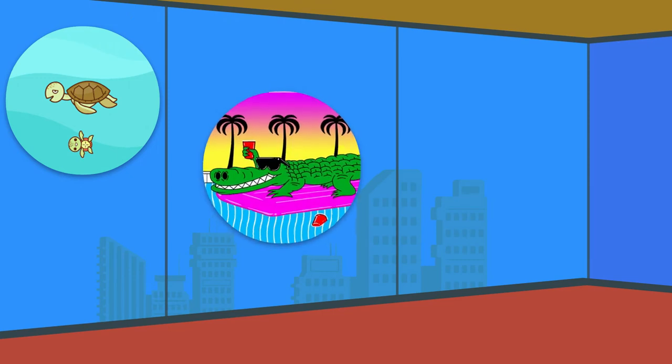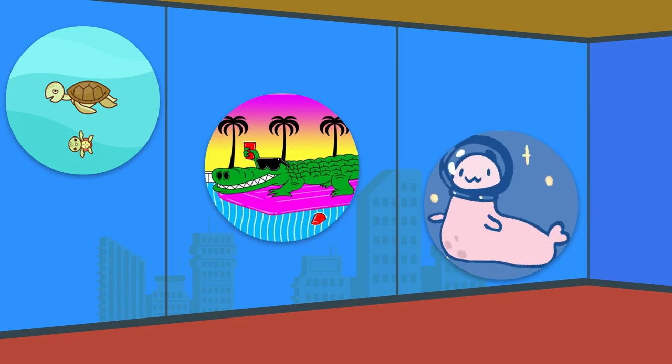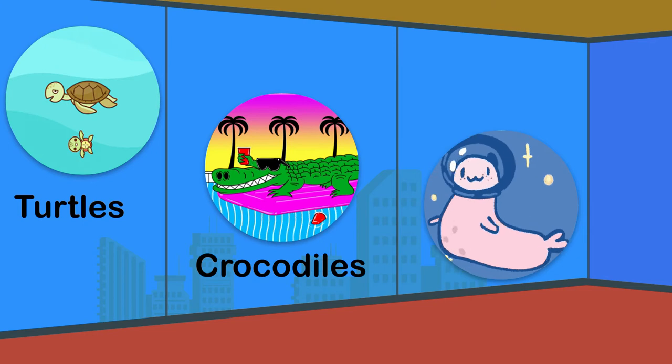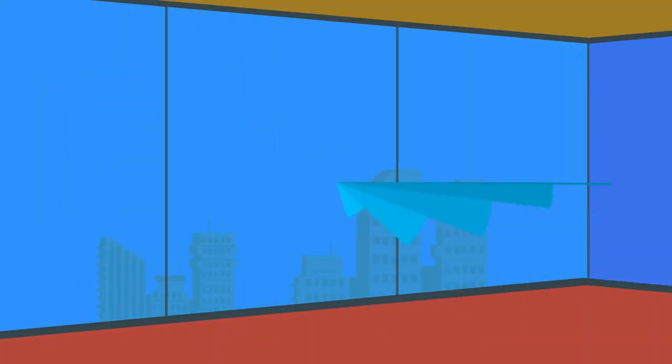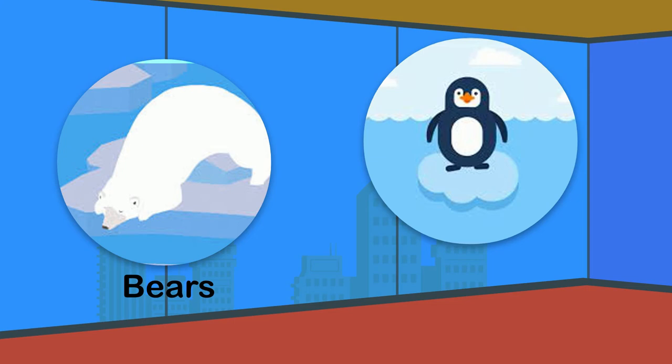Some live both on land and in water, such as turtles, crocodiles, and seals. Some live on the ice, such as polar bears and penguins.